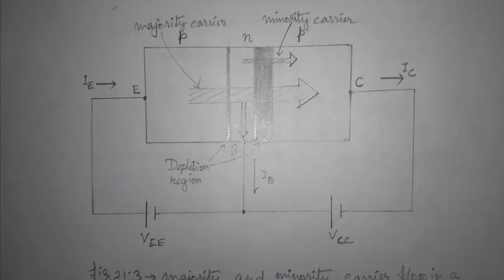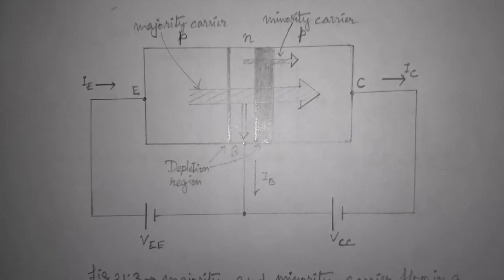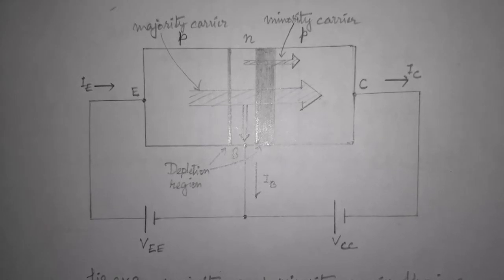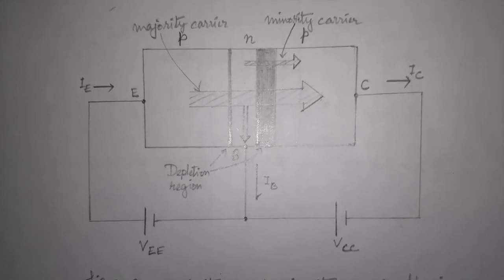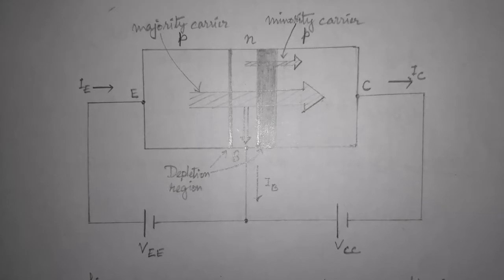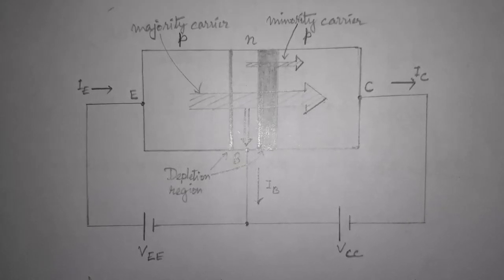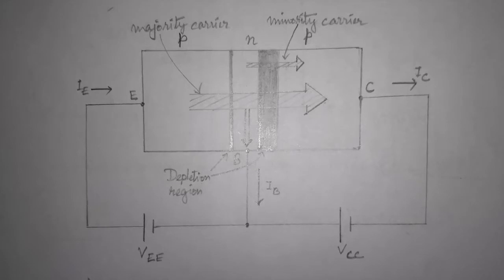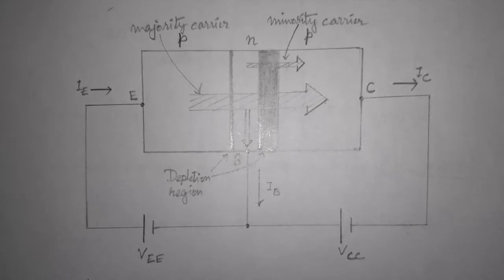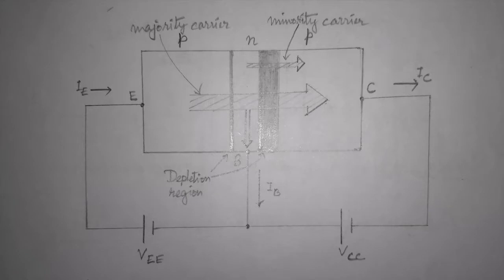These large number of majority carriers will diffuse to the P-type material, which is connected to the collector terminal as shown in this figure. We can understand the fact that these diffused majority carriers act as minority carriers in the reverse biased NP junction. In other words, these minority carriers have been injected to the N-type base region material.